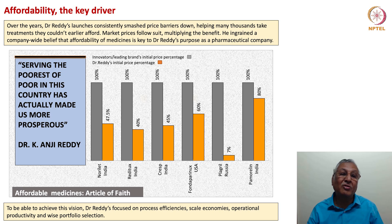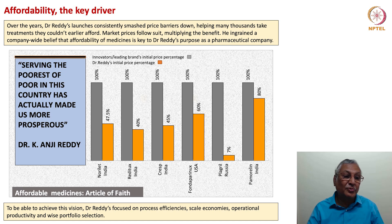Some examples: Norfloxacin was priced at 100% by others; he could launch it at 47.5% of the innovator price. Certain products he could launch at seven percent of the innovator price. 'Serving the poorest of poor in this country has actually made us more prosperous,' Dr. K. Anji Reddy said. This is the same philosophy of the 'bottom of the pyramid' which Dr. C.K. Prahalad outlined — one has to work for the poor and with the poor, and the profits would take care of themselves. Affordable medicines was the article of faith for Dr. Anji Reddy.